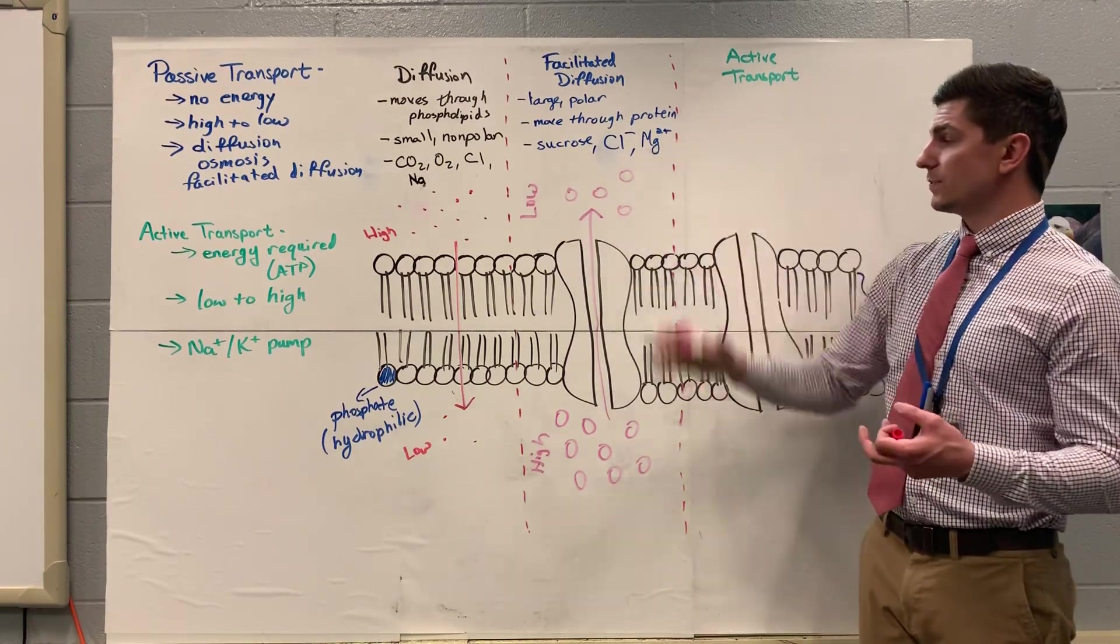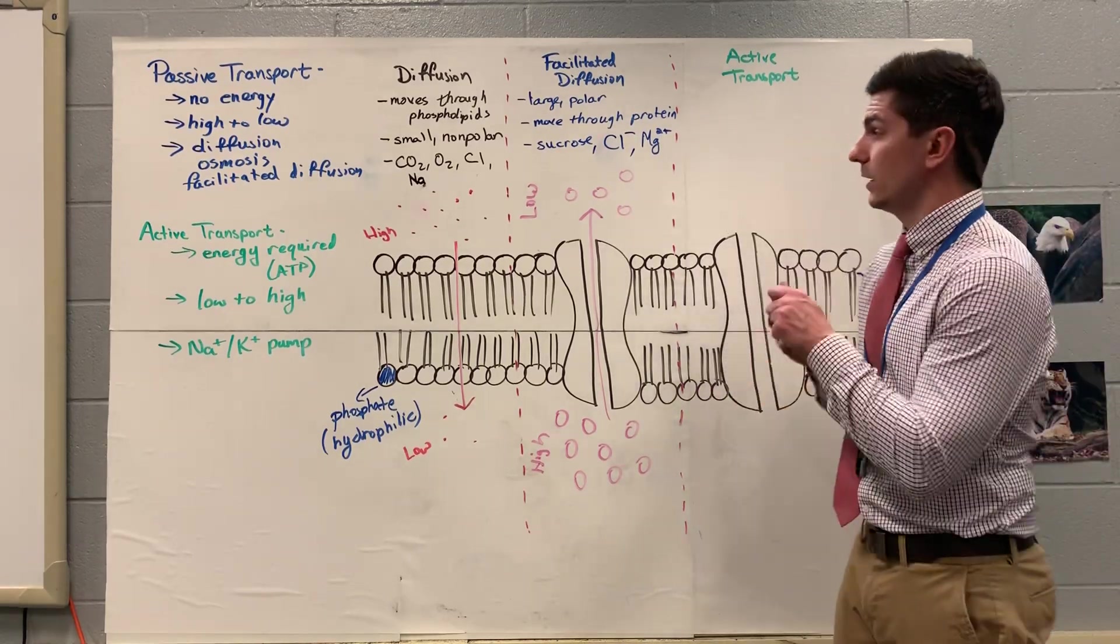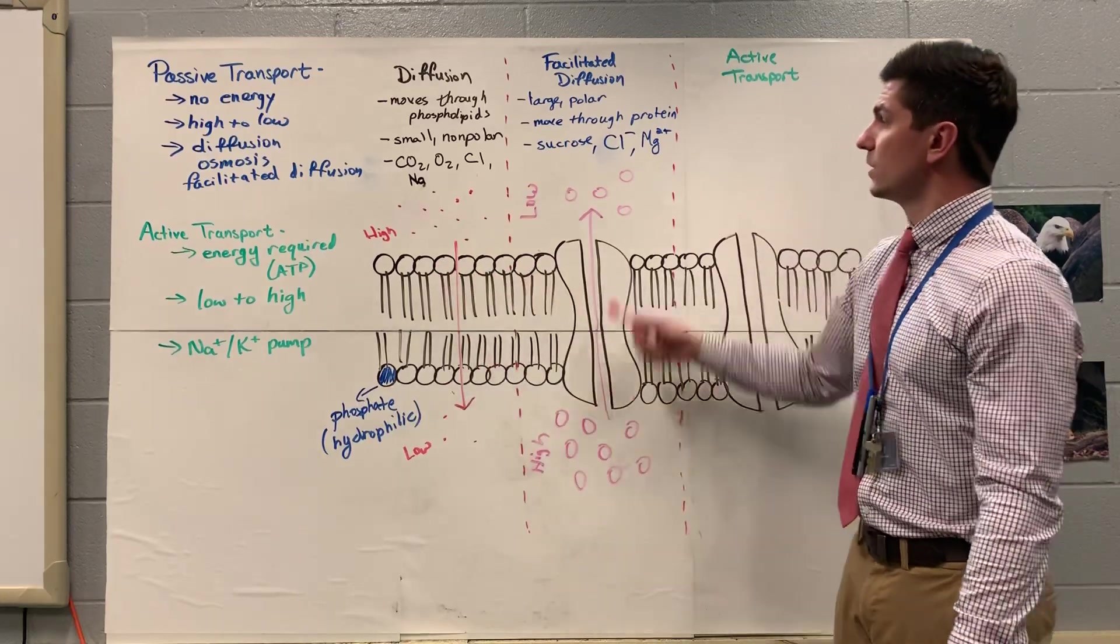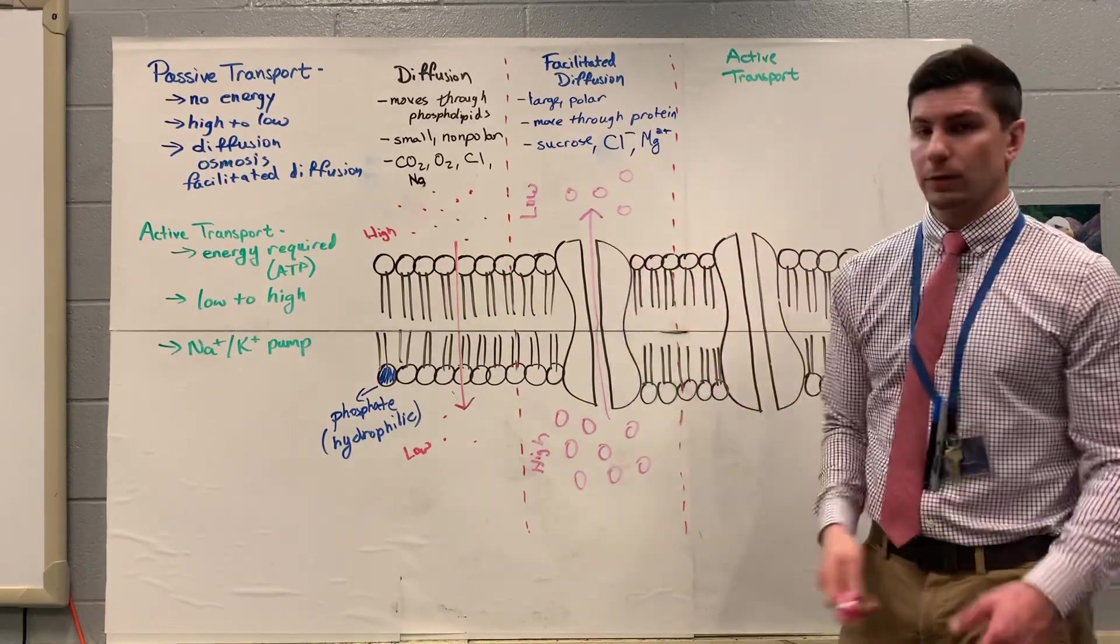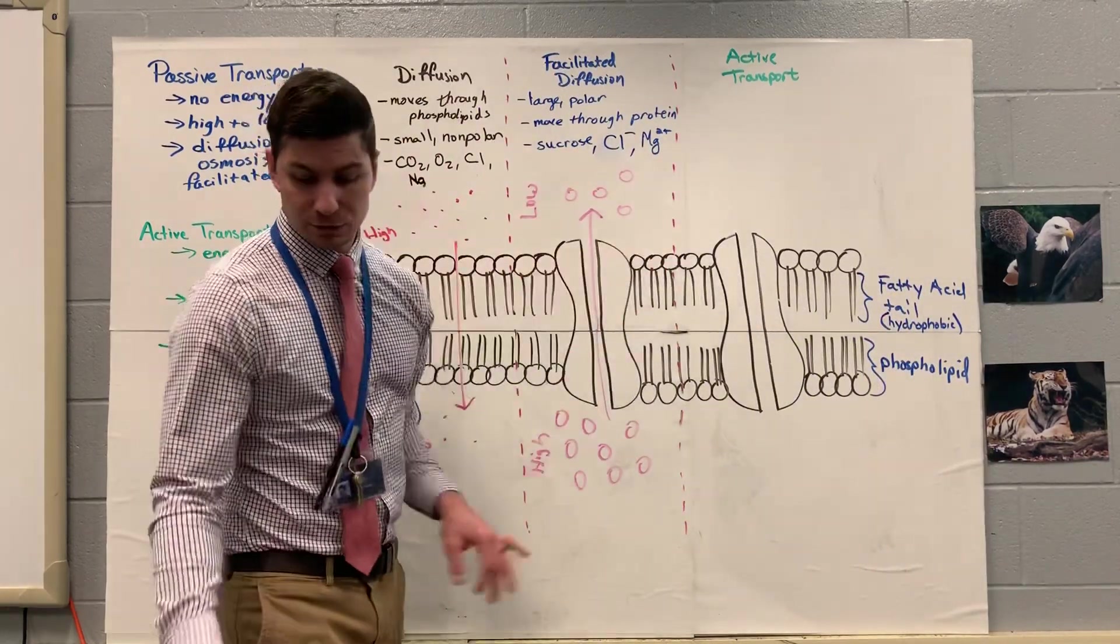That's diffusion. That's facilitated diffusion. You guys can see how they are similar. They're both moving from high to low and how they are different. Diffusion is moving right through the phospholipids. Facilitated diffusion is moving right through the membrane protein. Lastly, we're going to have active transport.